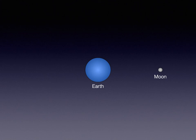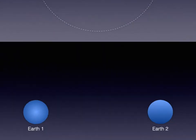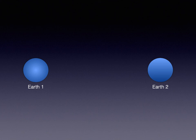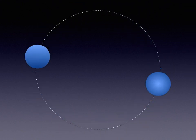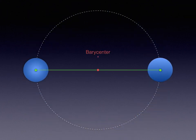Before returning to the topic of tides, I need to correct a misconception about orbits. We generally say that the Moon orbits the Earth, but it would be more accurate to say that the Moon and Earth orbit each other. First, let's consider two objects of equal mass — say, two identical Earths. If these two planets were in orbit around each other, they would both follow the same path, orbiting their common center of mass, which astronomers call the barycenter.